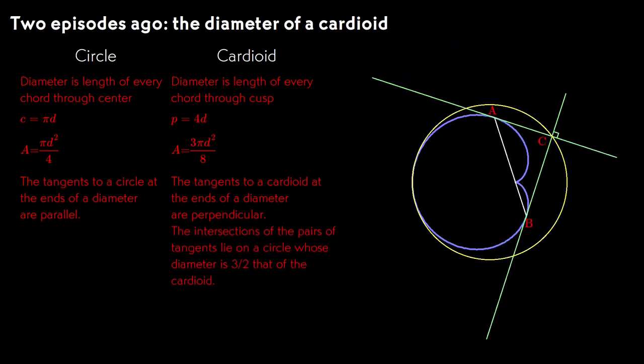It turns out that the locus is a circle. The diameter of the circle is 3 halves the diameter of the cardioid, and the center of the circle is the center of the original fixed wheel. We'll be seeing the larger circle a lot.